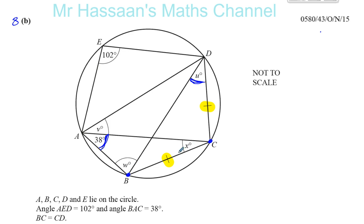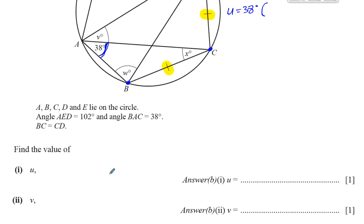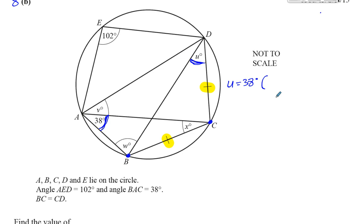In some of the later papers they do sometimes ask for reasons, so I'm going to write the reasons down here — although in this particular question they didn't ask for the reasons, and you would lose no marks for not writing them down. But some of the more recent papers do ask for reasons. So you can say: angles on the same arc. That's perfectly fine to write. So that's angle U out of the way.